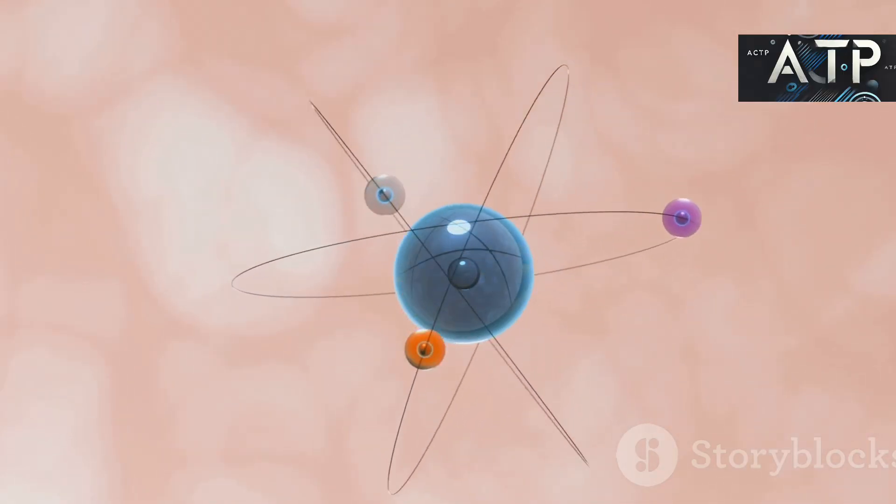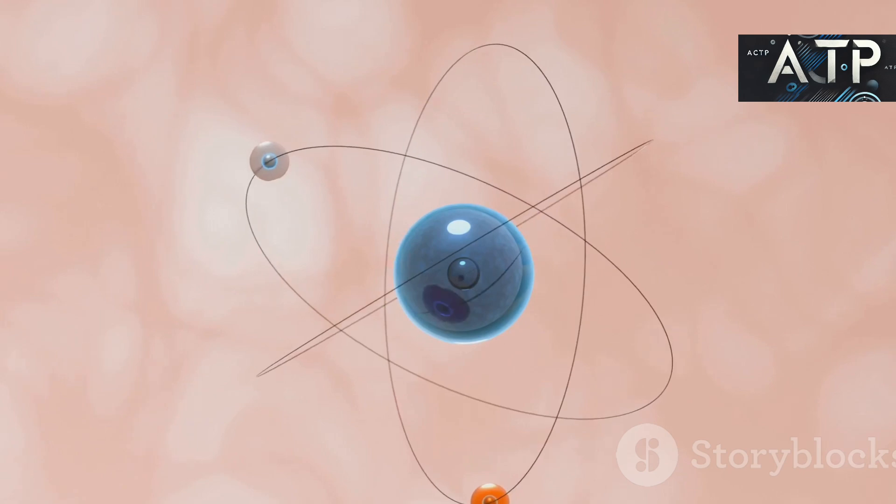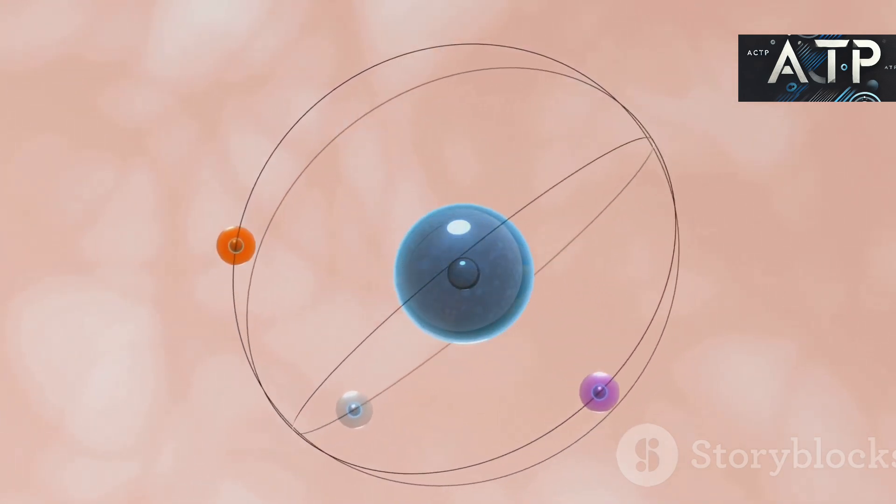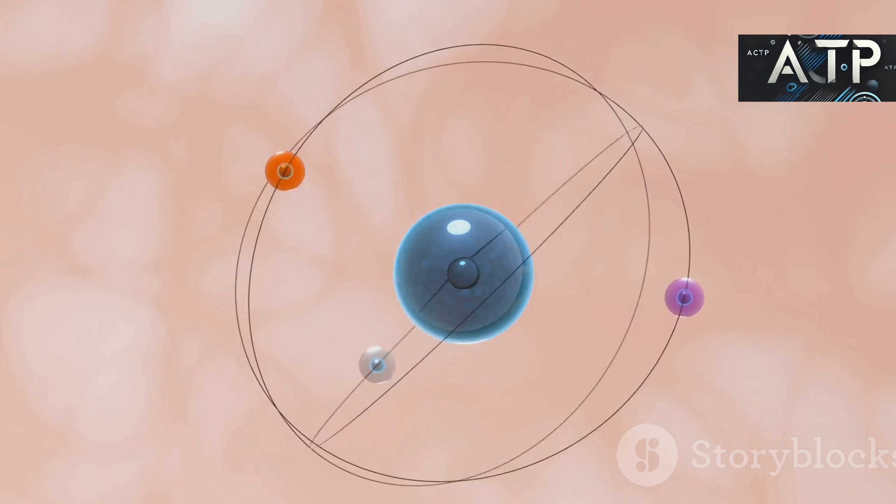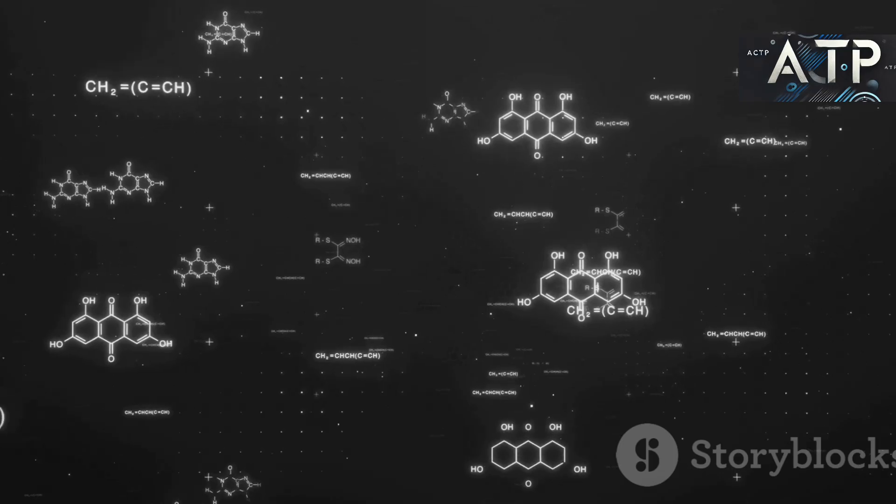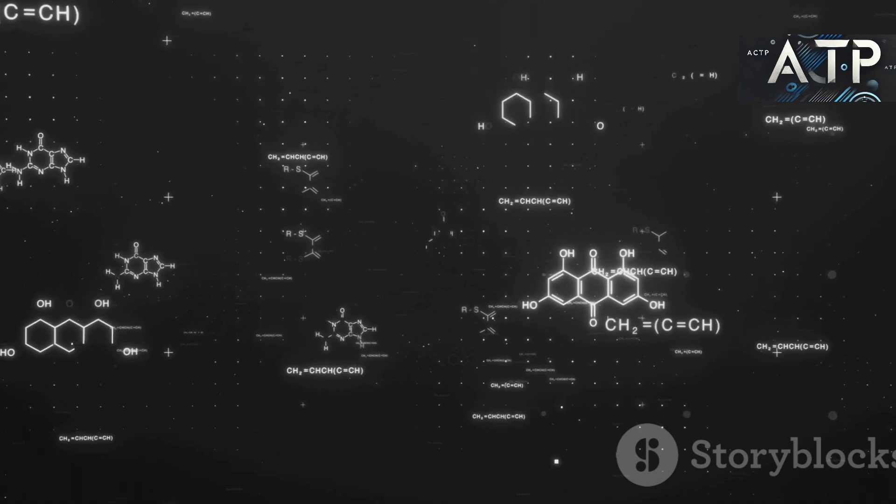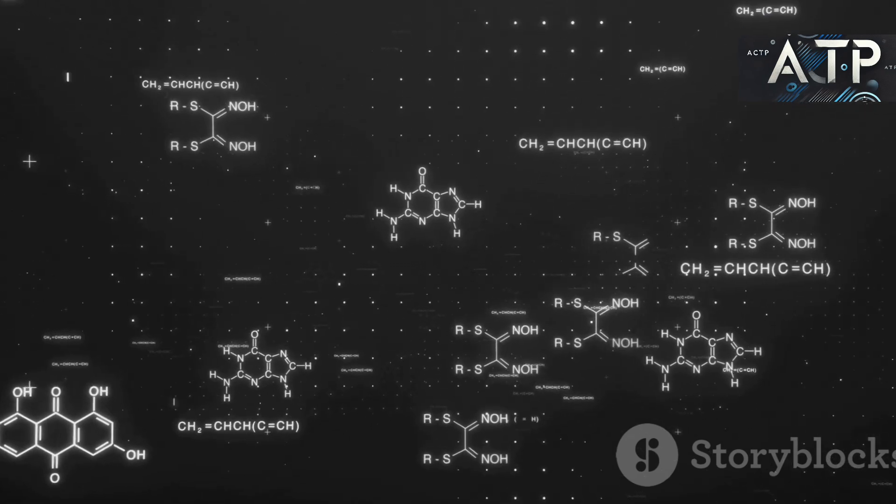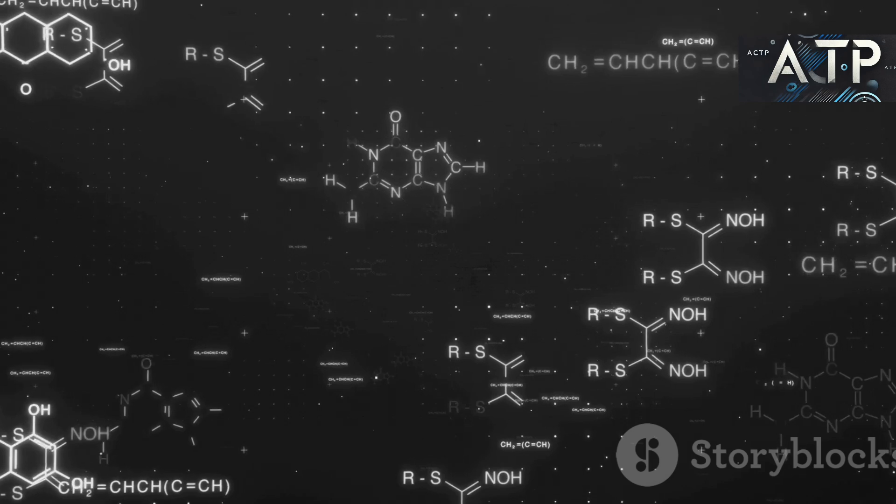Magic numbers: Certain numbers of protons or neutrons, like 2, 8, 20, 28, 50, 82, and 126, complete these shells, creating particularly stable spherical nuclei. These are analogous to the noble gases in the periodic table, where completely filled electron shells confer extra stability.